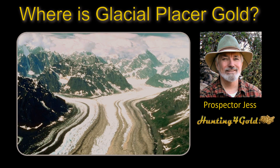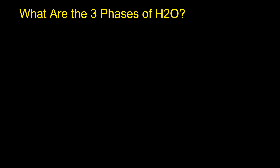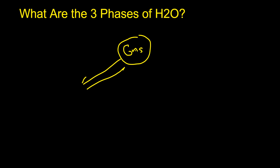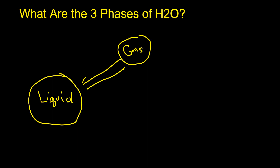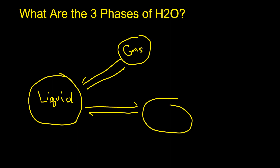Before the lab experiment, let's go to the blackboard and study a little theory. What are the three phases of water? The three phases of water are gas, also known as steam, which can be converted to or from liquid water, and water can be converted to a solid, also known as ice. These interconversions mean you can go back and forth between these different states.